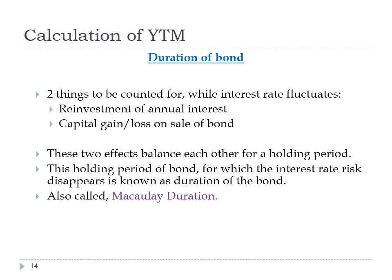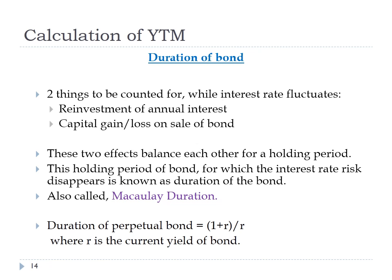The duration of bond is also known as Macaulay duration, as the concept was first introduced by F. Macaulay. The duration of a perpetual bond — a bond with an indefinite holding period — is calculated by (1 + R) / R, where R is the current yield of the bond.